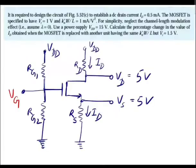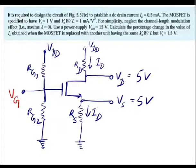Consider this example. In this problem it is required to establish a DC drain current of 0.5 milliamperes, so ID = 0.5 mA. The MOSFET is specified with threshold voltage Vt = 1 volt, process constant KN' W/L = 1 mA/V², and the channel modulation factor lambda is 0. The circuit uses a power supply of 15 volts.